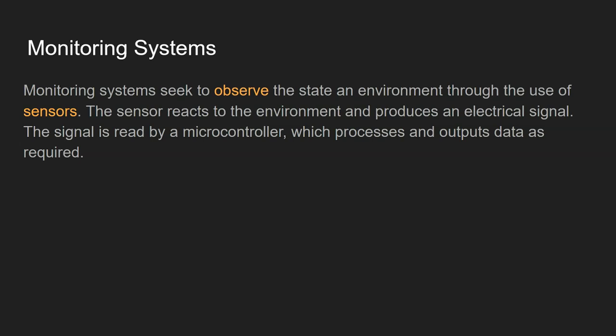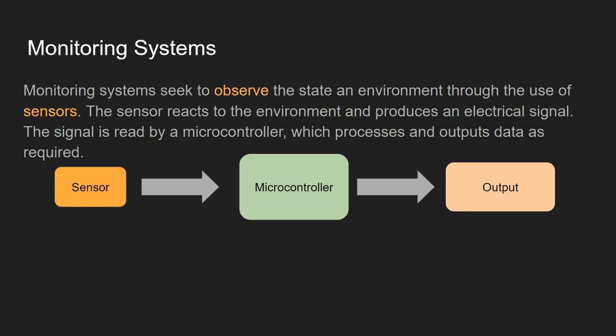Monitoring systems are systems that seek to observe the state of an environment through the use of sensors. The sensor reacts to the environment and produces an electrical signal, and that signal is then read by a microcontroller which processes and outputs the data as required.